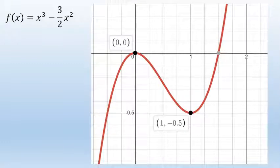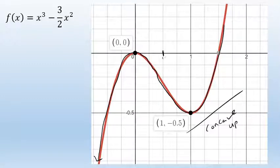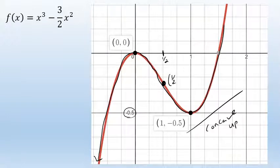Looking at the graph of this function, you can see that it does start out as concave down, and then at some point it switches to concave up. Using calculus, we found that the point of inflection was exactly 1 half comma negative 1 fourth. This would be the x value of 1 half, and looking closely at how the y axis is labeled, this would be negative 1 fourth. This is the exact point where the graph changes concavity — it's called a point of inflection.